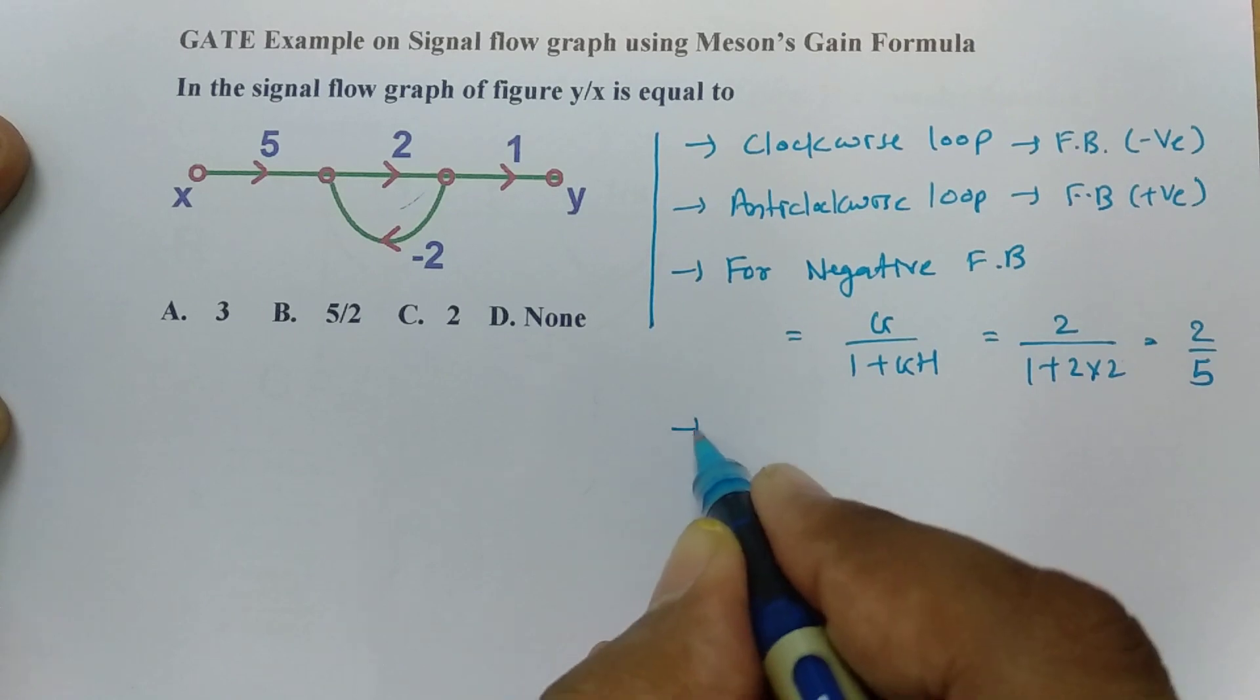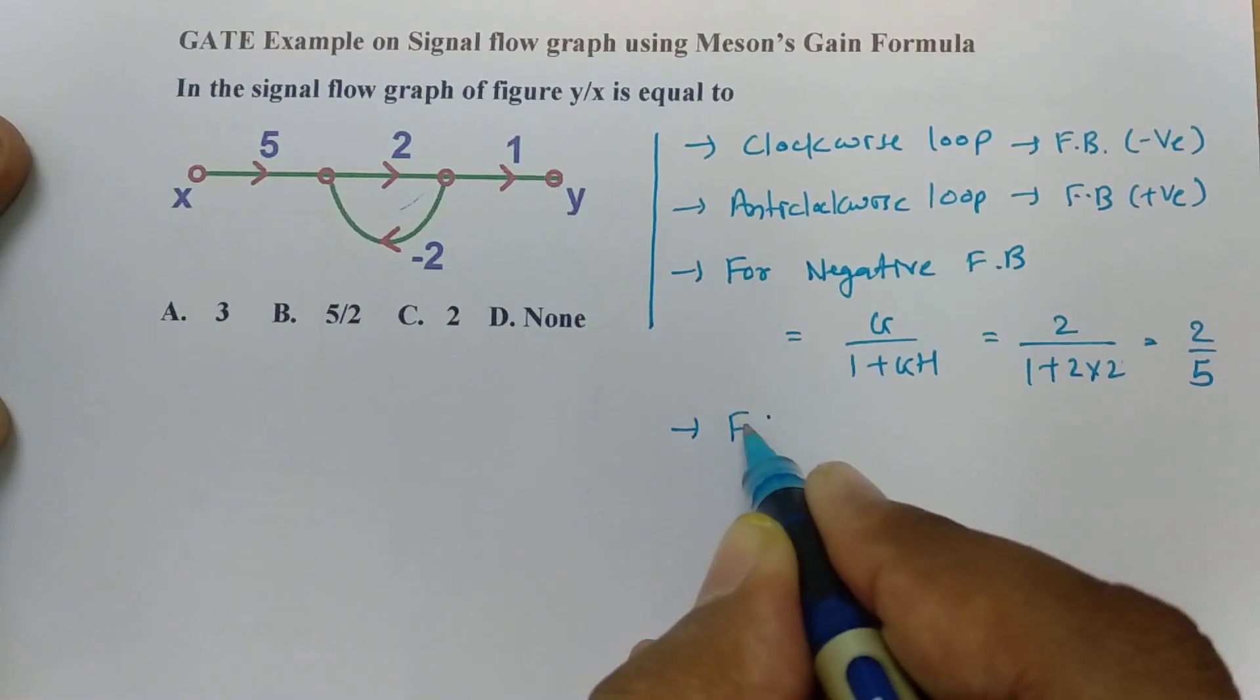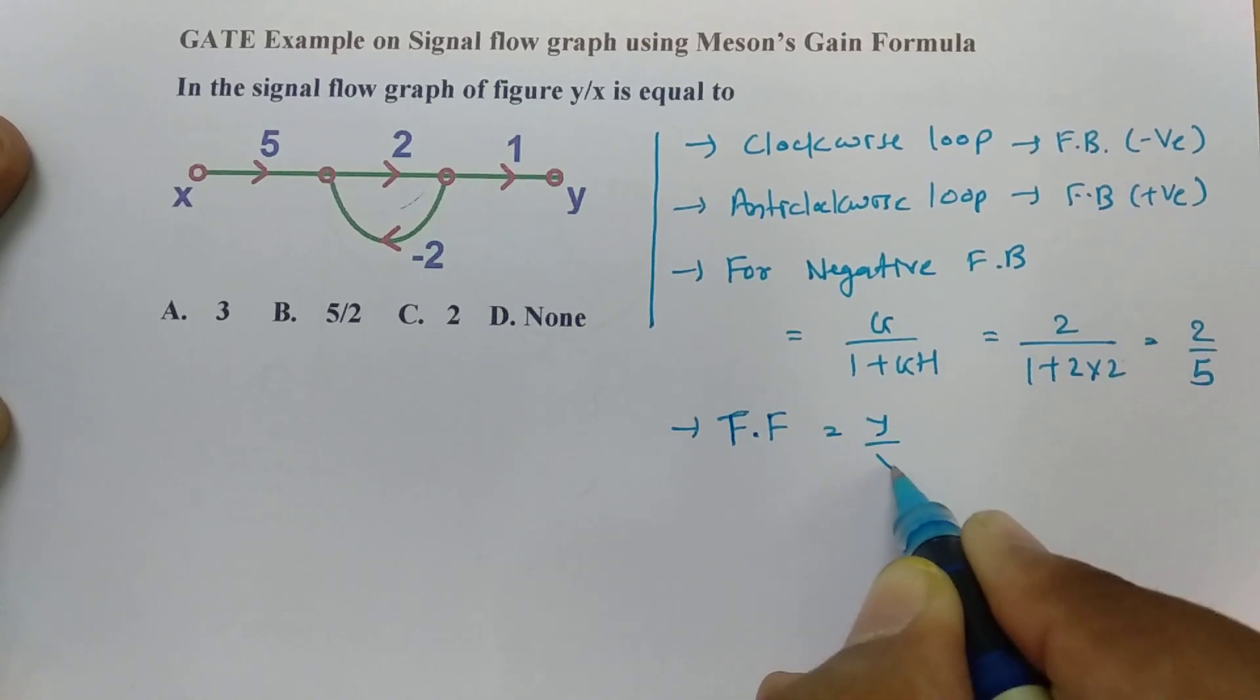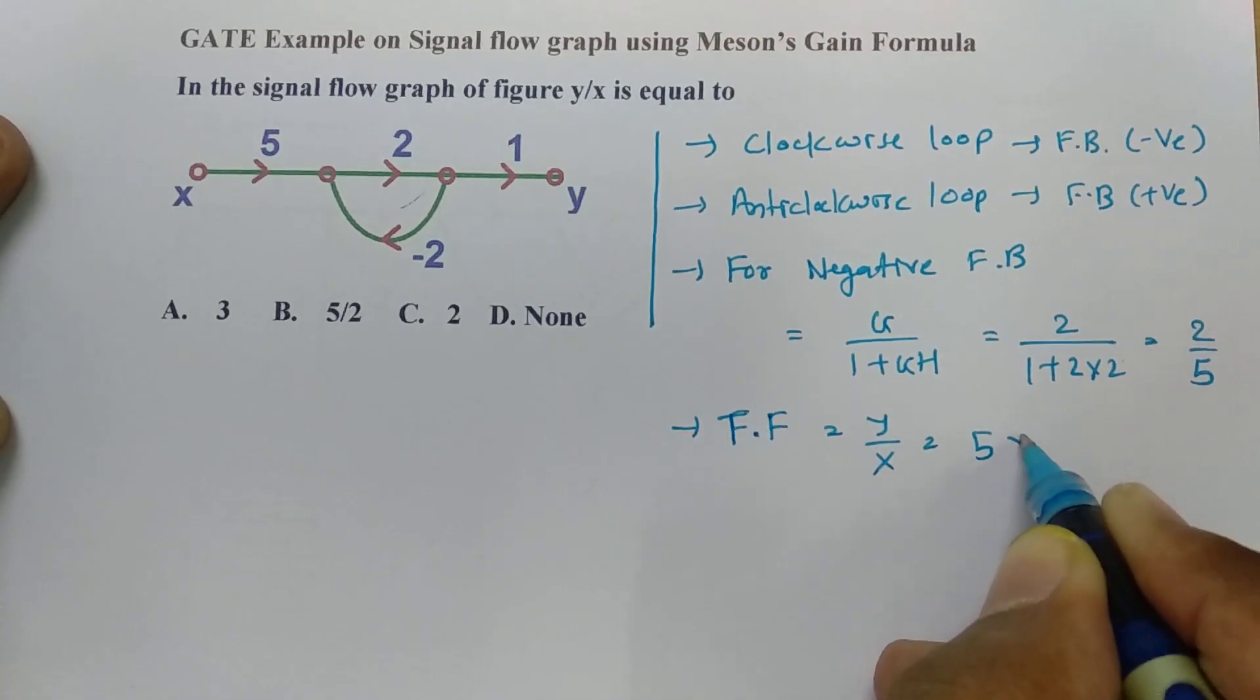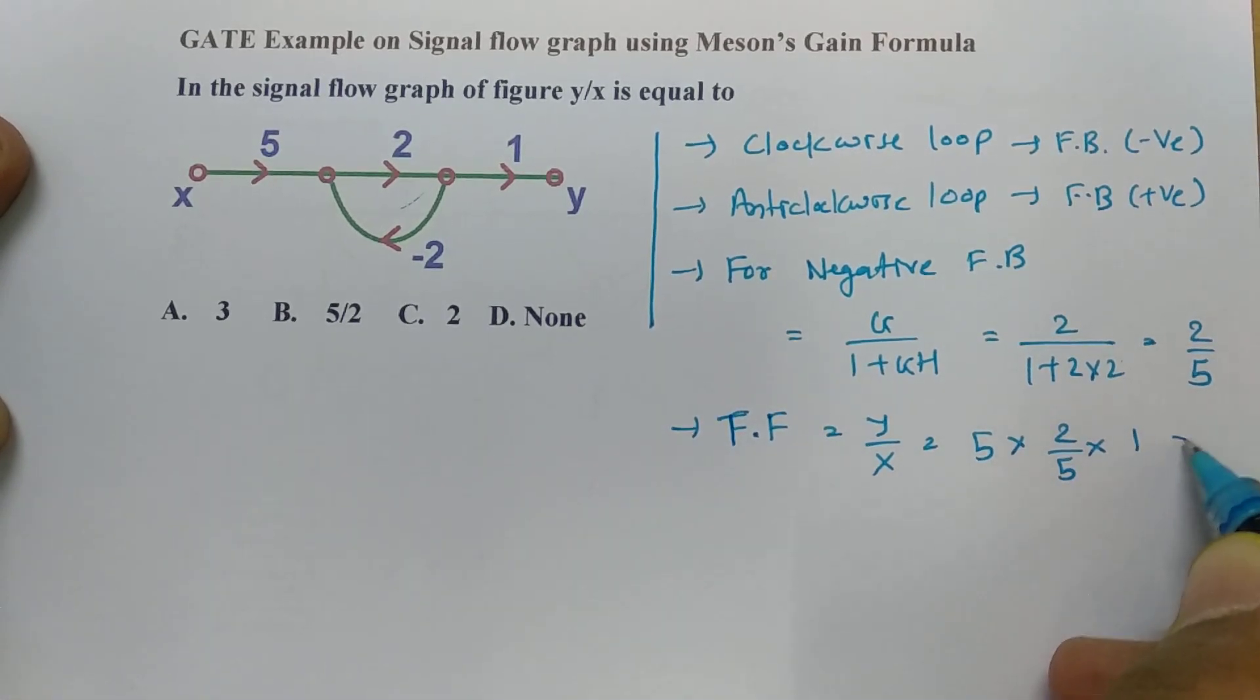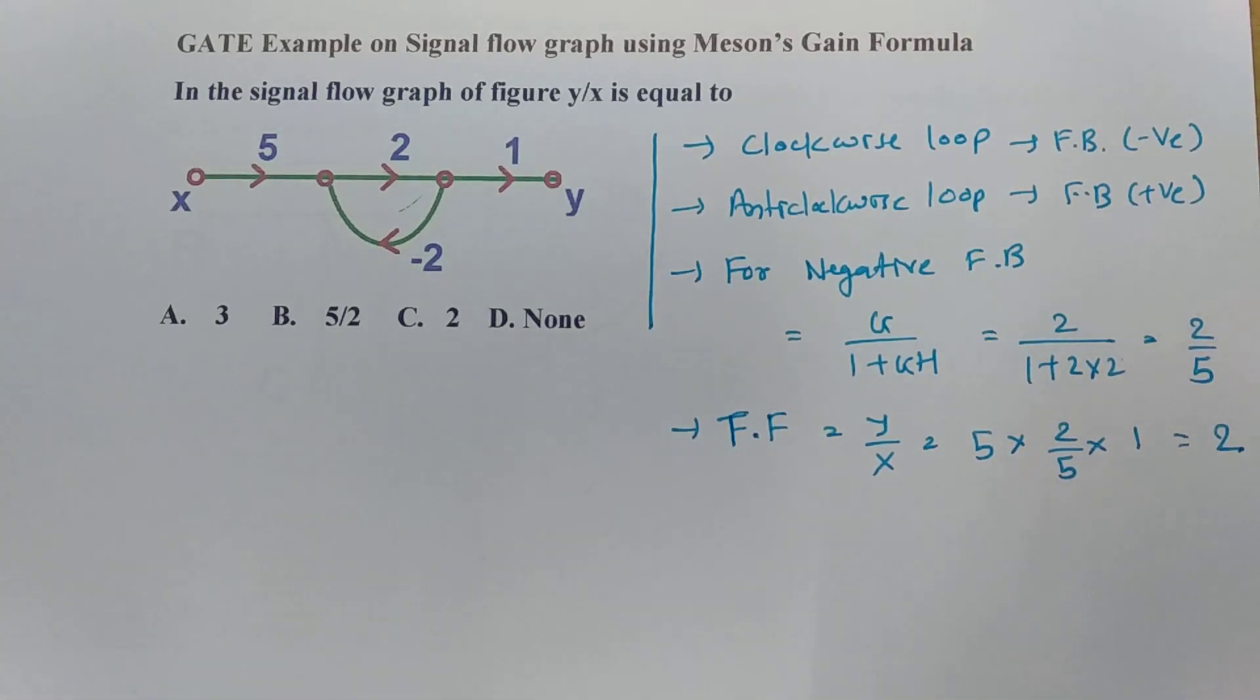So resultant transfer function, that is y by x, has to be 5 into 2 by 5 into 1. So that will be, 5 will get cancelled, it will be 2 only.